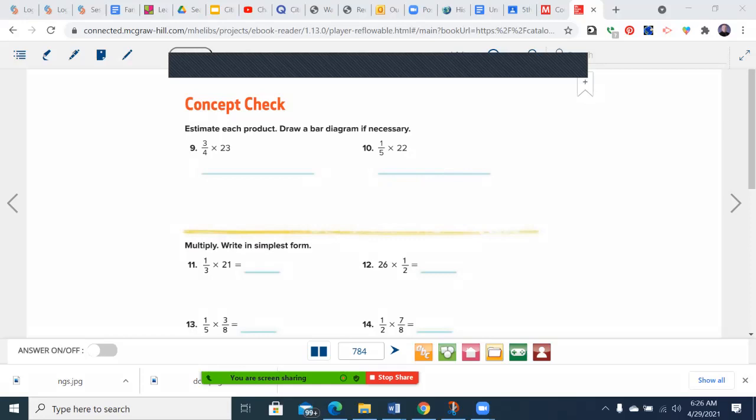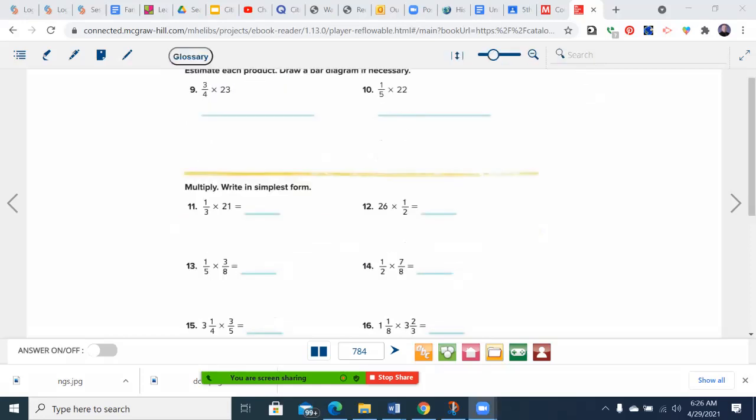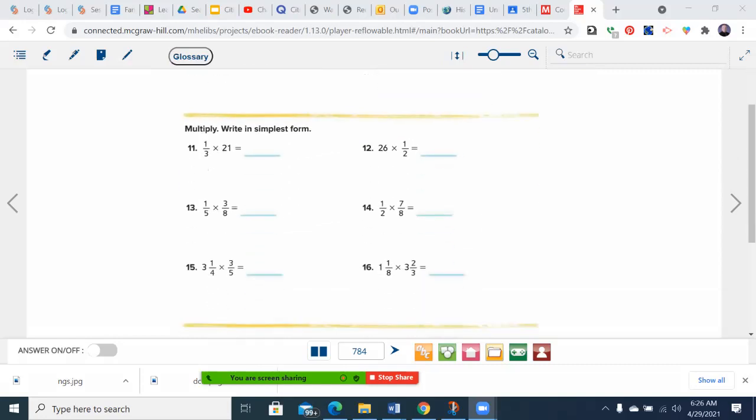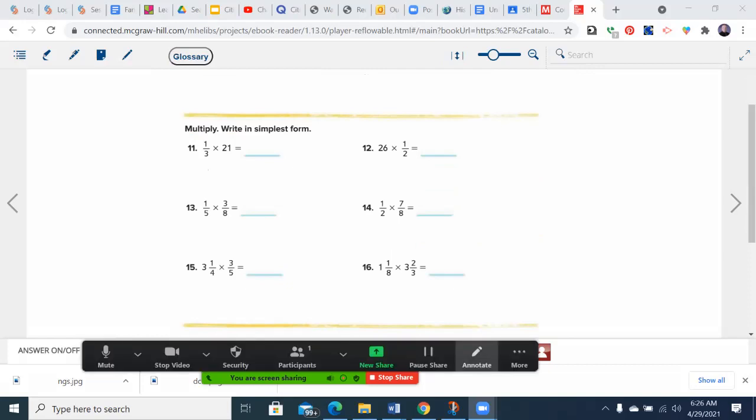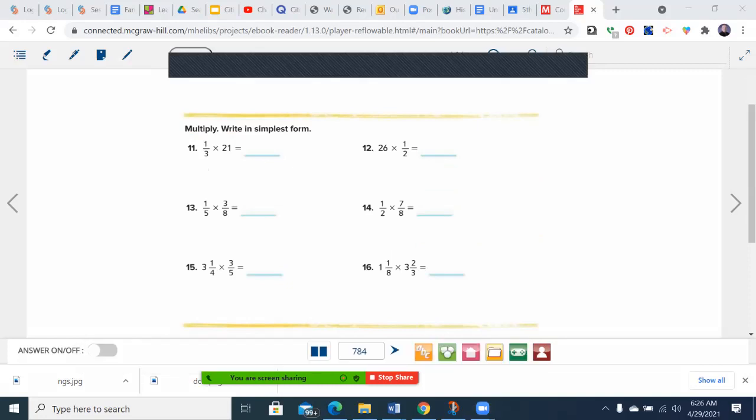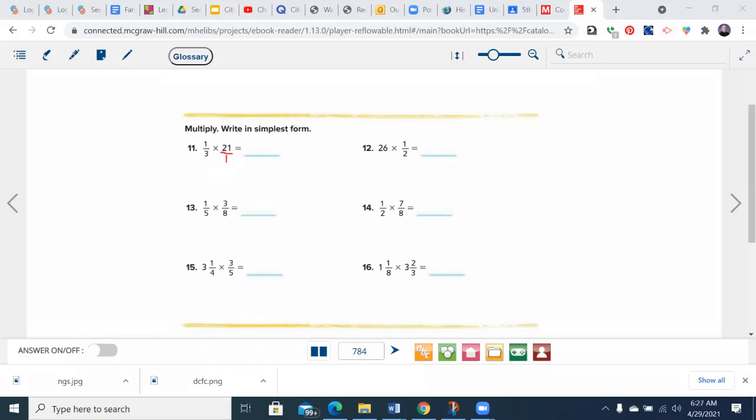All right, next one. I'll do number 11 and 13, and you will end up doing 12 and 14. Multiply, write in simplest form. Whenever you have a whole number, turn it over 1. So I get 1 times 21, which is 21. 3 times 1 is 3. How many times does 3 go into 21? Seven. Over here, 1 times 3 is 3, 5 times 8 is 40, and there's nothing I can do to make that simpler. 3/40 is the answer.